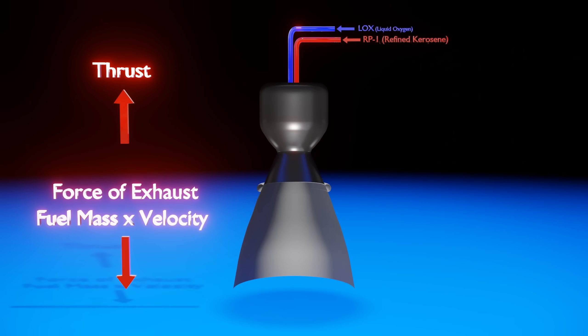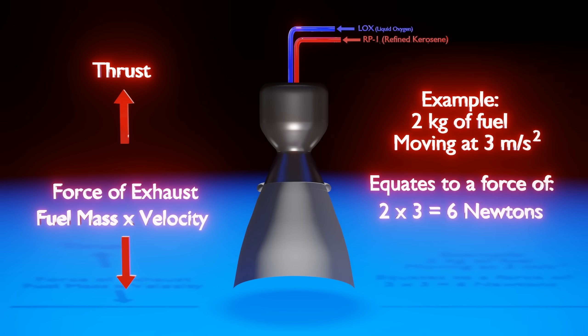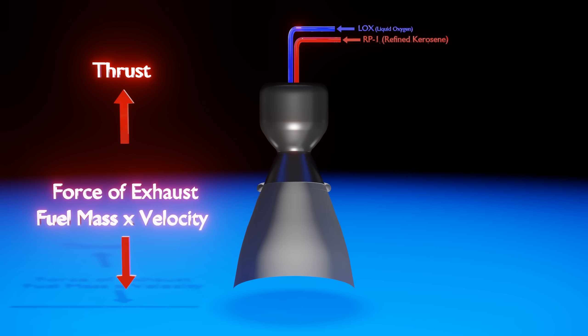A simplified version of this thrust formula is found through multiplying the amount of fuel that is being projected through the engine by the velocity in which the fuel was projected with. You can see here how the faster the fuel is thrown out of the rocket, the greater the force will be, using the same amount of fuel. This projection of the fuel creates a force, and according to Newton's third law, this force projected down will push the rocket up with the same force. So the goal of the engine is to get these exhaust particles going as fast as possible.